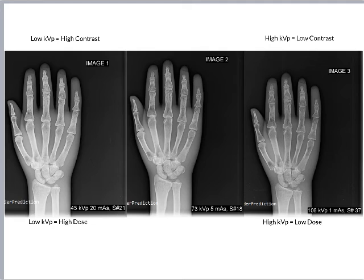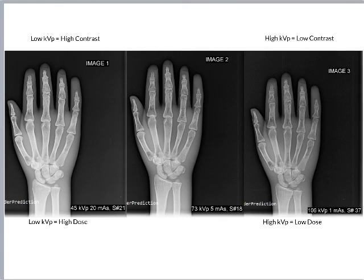Conversely, by using a low KVP, we'll have to increase mAs, which will also increase patient dose. When we consider both the quality of image contrast and the effects on patient dose, image two arises as the most optimum image because it has a sufficient amount of contrast to guide diagnosis and it's taken at a relatively low patient radiation exposure.